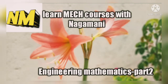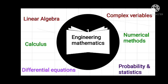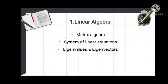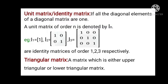Yesterday I started the engineering mathematics subject and discussed some points like how the matrix is defined and types of matrices. Now coming to the unit matrix: if all the diagonal elements of your diagonal matrix are one, then the matrix is said to be a unit matrix, also called the identity matrix. It can be denoted by I_n.